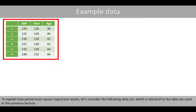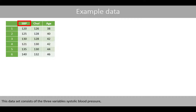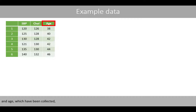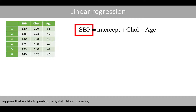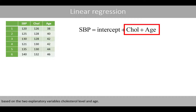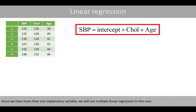To explain how partial least-square regression works, let's consider the following dataset, which is identical to the data we used in the previous lecture. This dataset consists of three variables: systolic blood pressure, cholesterol level, and age, which have been collected from six individuals. Suppose that we like to predict the systolic blood pressure based on the two explanatory variables, cholesterol level and age. Since we have more than one explanatory variable, we will use multiple linear regression in this case.